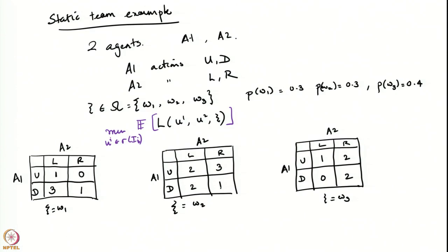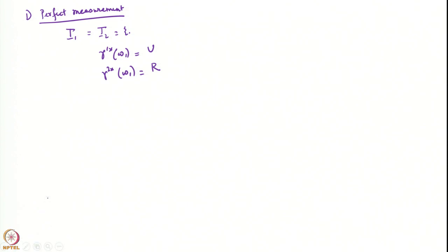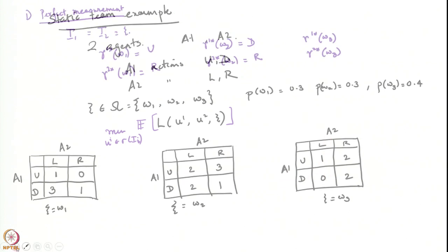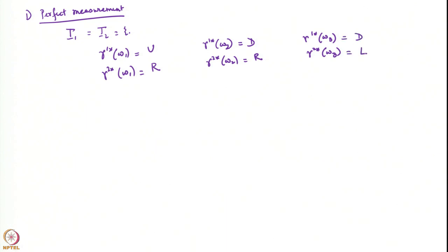If psi equals omega 2, these agents should choose the pair that gives least cost, which is agent 1 choosing D and agent 2 choosing R. When psi equals omega 3, they want the minimum cost, so agent 1 chooses D and agent 2 chooses L — giving gamma1*(omega3) = D and gamma2*(omega3) = L.